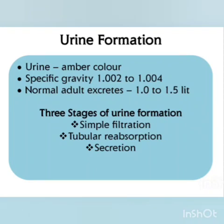The main function of the kidney is the formation of urine through a series of activities. Urine is an amber-colored transparent liquid with a specific gravity of 1.002 to 1.040. A normal healthy adult excretes about 1 to 1.5 liters of urine per 24 hours, containing mainly water, as well as urea, inorganic salts and organic constituents. The kidneys form urine in three phases: simple filtration, selective reabsorption and secretion.